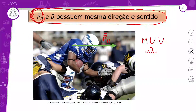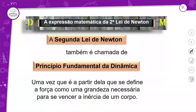Por exemplo, num jogo, o jogador aplica força num determinado sentido; com várias forças concorrentes, a força resultante é dada numa certa direção e sentido. Como a aceleração possui a mesma direção e sentido da resultante, o vetor aceleração estará também nesse caso para a horizontal e para a direita.